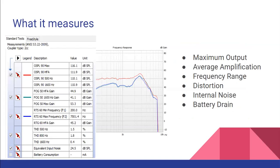The first is maximum output. This is how much amplification the hearing aid is capable of overall. In the picture, it's the red line. You can see it at the top — it's nice and smooth and flat, which means it's a good, consistent, loud output. It's capable of a lot of power.